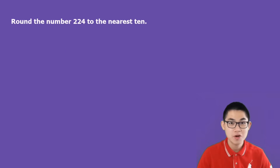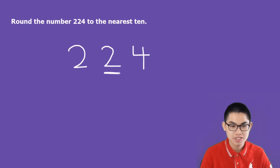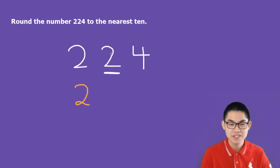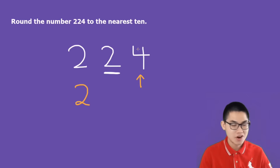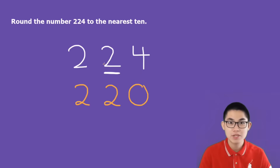Let's round 224 to the nearest ten. We have 224. This is the ones place, and this is the tens place. So we want to round this number here. All the numbers to the left of 2, we just copy it down — so here we have 2. How about this 2? Will it stay the same or will it be different? That depends on the number to the right. Since 4 is smaller than 5, then number 2 stays the same. And this 4 just becomes 0, because all the numbers to the right of 2 we just turn into zeros.